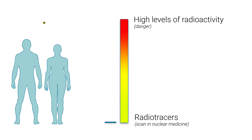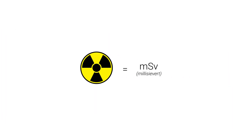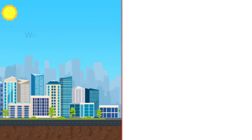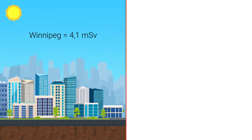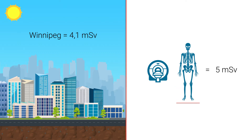The unit of measurement used to measure radiation is called millisievert. For example, a person living in Winnipeg annually receives an average of 4.1 millisieverts, whereas an examination of bone structures in nuclear medicine generates an average of 5 millisieverts.